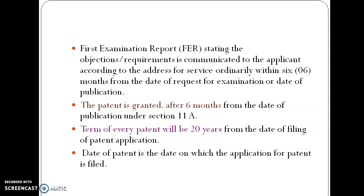After six months, if there are no such objections, the patent will be granted to the patentee, and it will be valid from the date of publication under Section 11A. The validity of every patent will be 20 years from the date of filing of the patent application. The date of the patent is the date on which the application for the patent is filed.